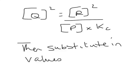On this slide it shows Q squared equals R squared over P to the power of 1 times Kc. You just substitute in the values for each of those.